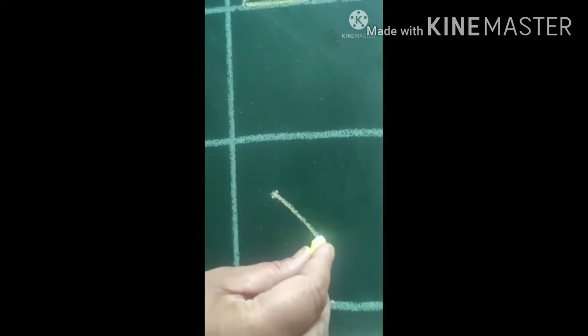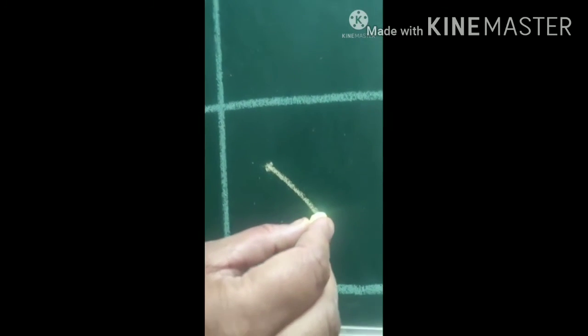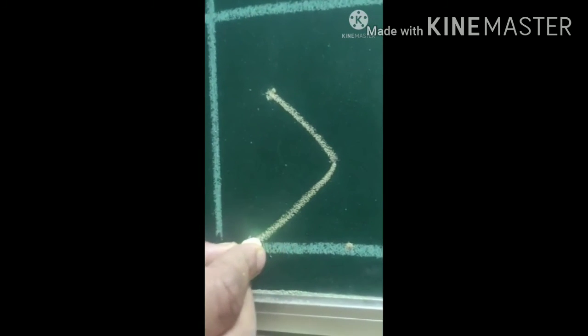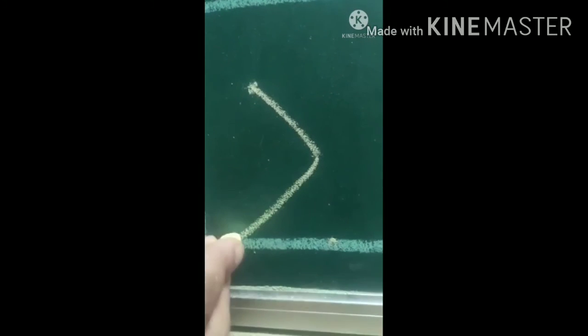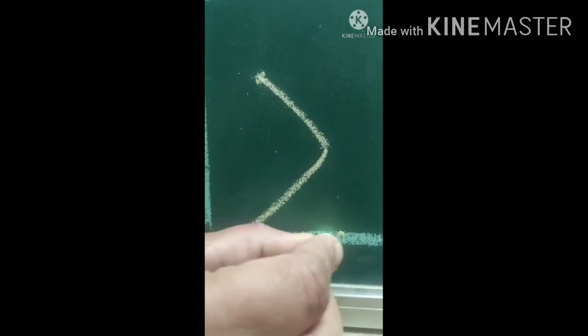First make a slight curve, join the dot and then bring it down and then take it back. This is two.